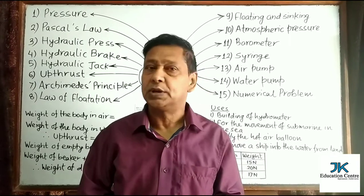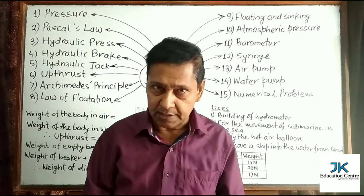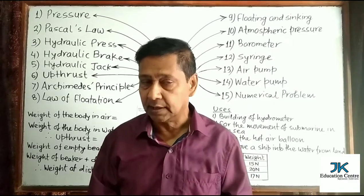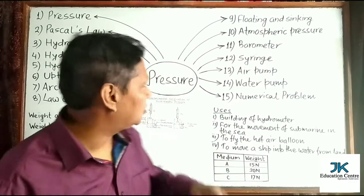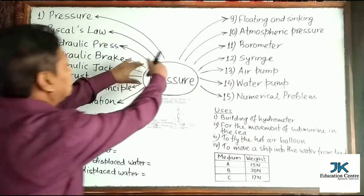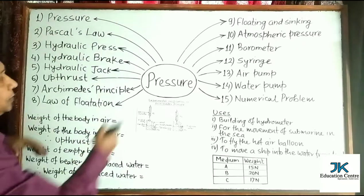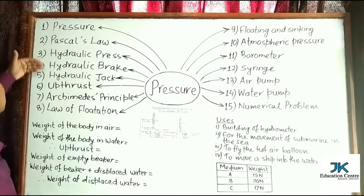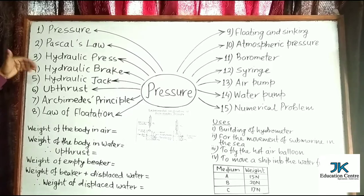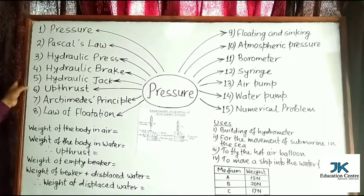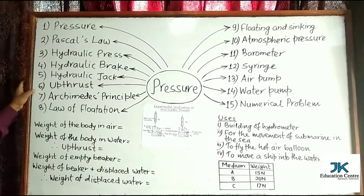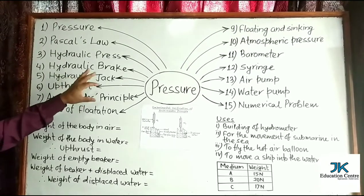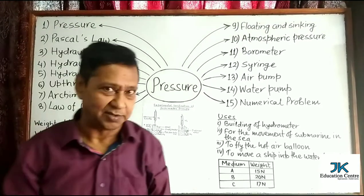This class is the continuation of the previous class. We are continuing the chapter on pressure in physics. As I told you in the previous class, I mapped this chapter on pressure into 15 major points, and we are continuously dealing with each of the points. In the last class, I described up to point number 6. Now I am starting with point number 7, that is Archimedes' Principle.